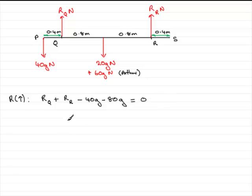So if I add 40g and 80g to the other side, or both sides, I'm going to get RQ plus RR equals 80g plus 40g which is 120g.